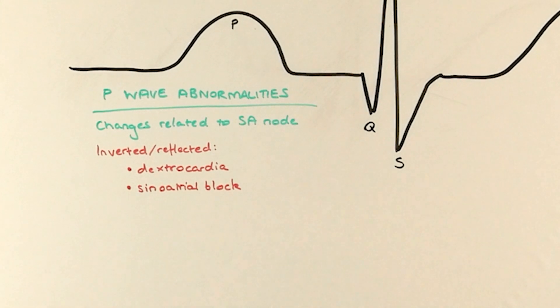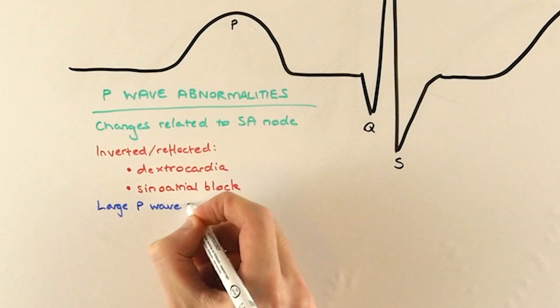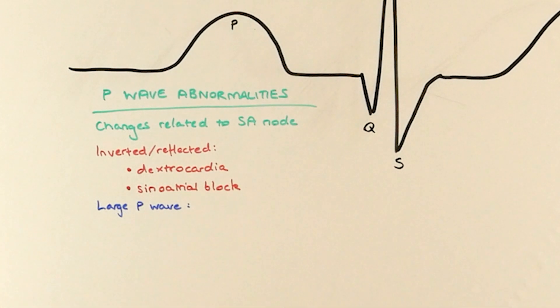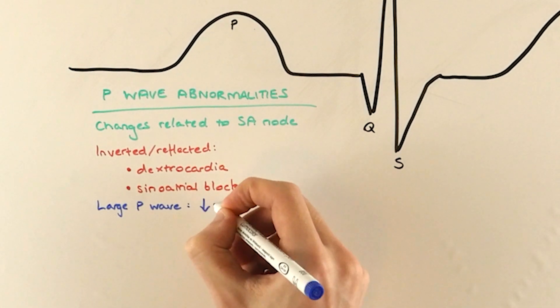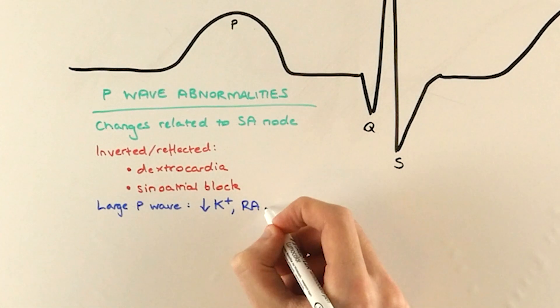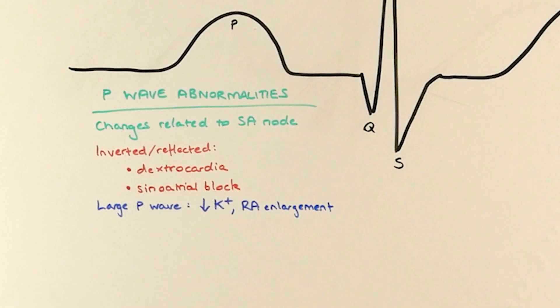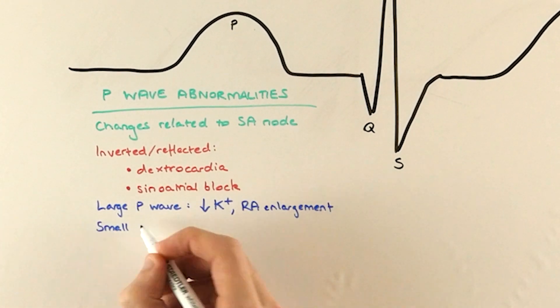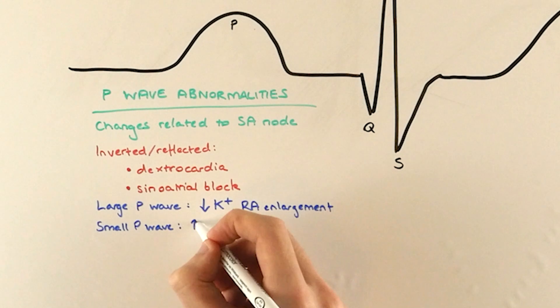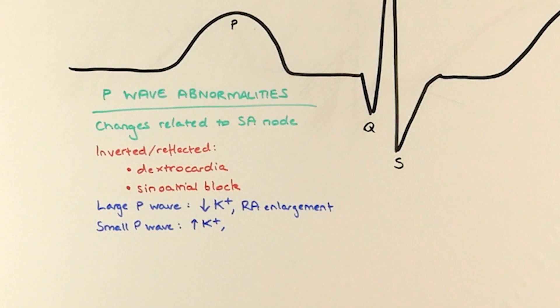It could also be sinoatrial block if the SA node isn't firing properly and another part of the heart has then taken over as the pacemaker. A big P wave can indicate both hypokalemia, which is low potassium, and right atrial enlargement.